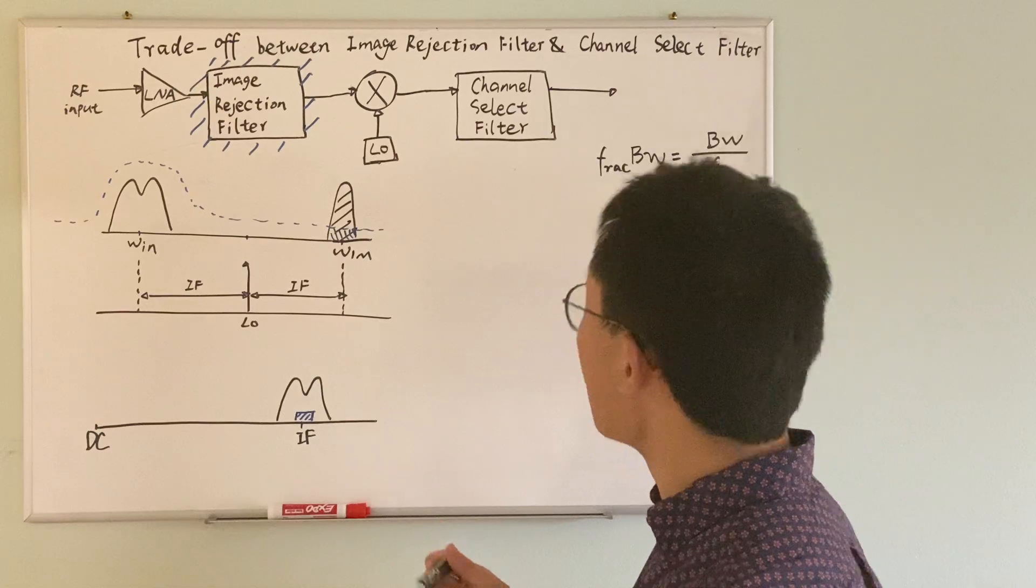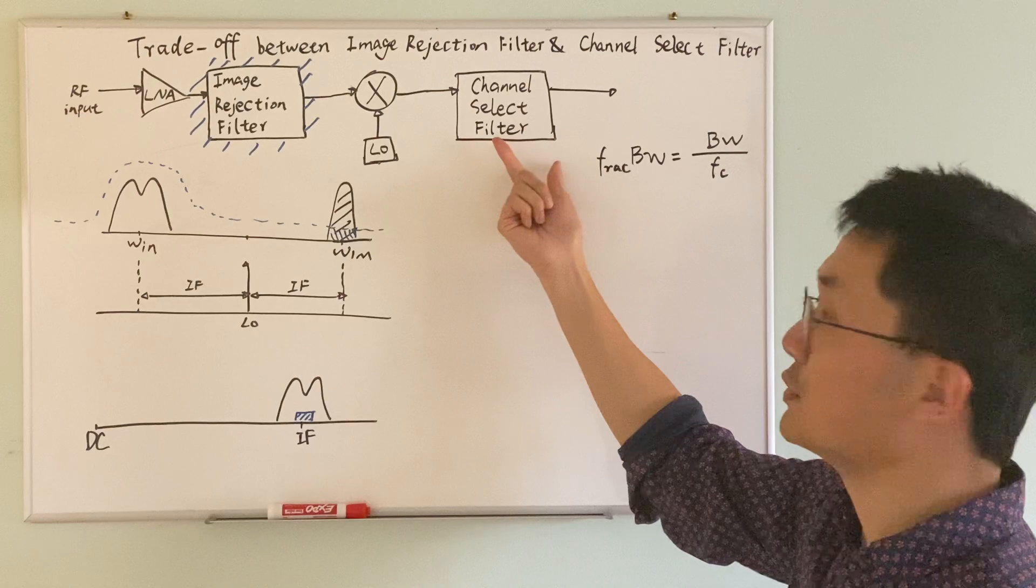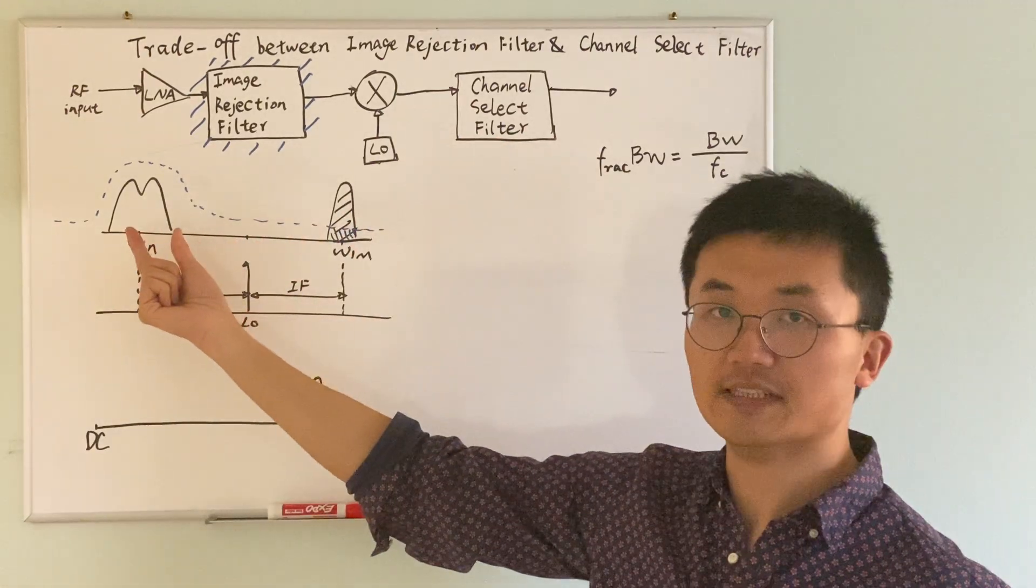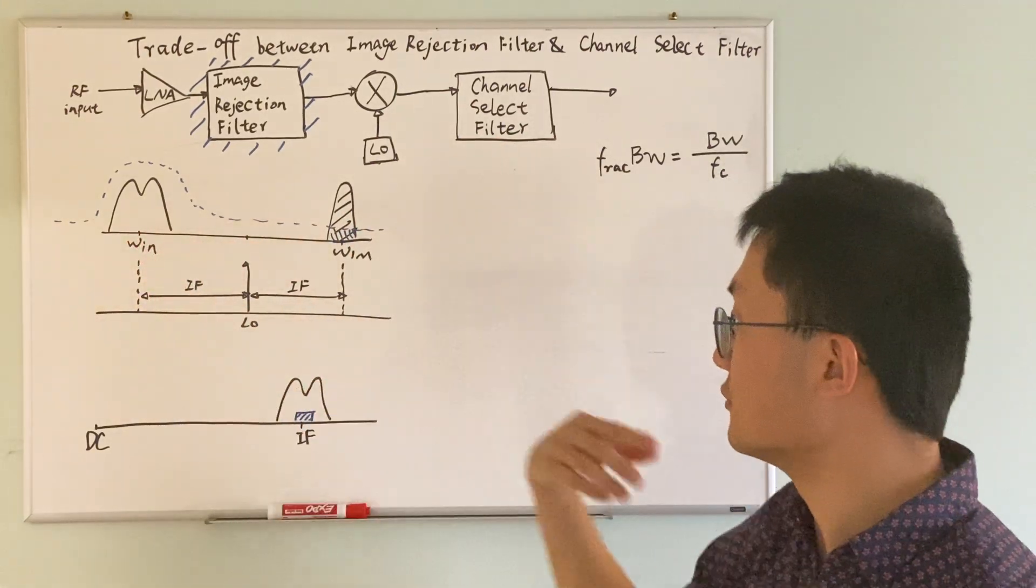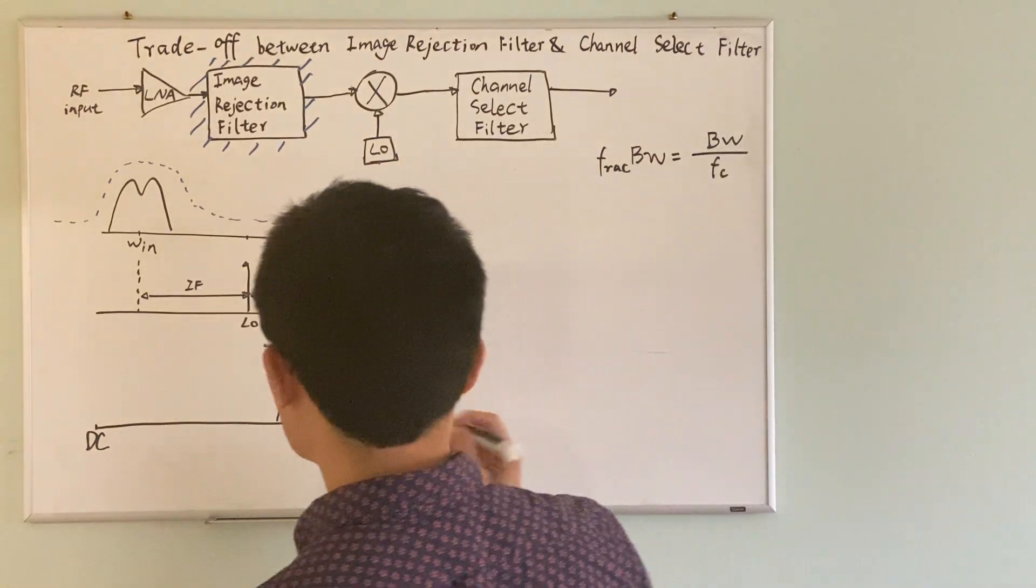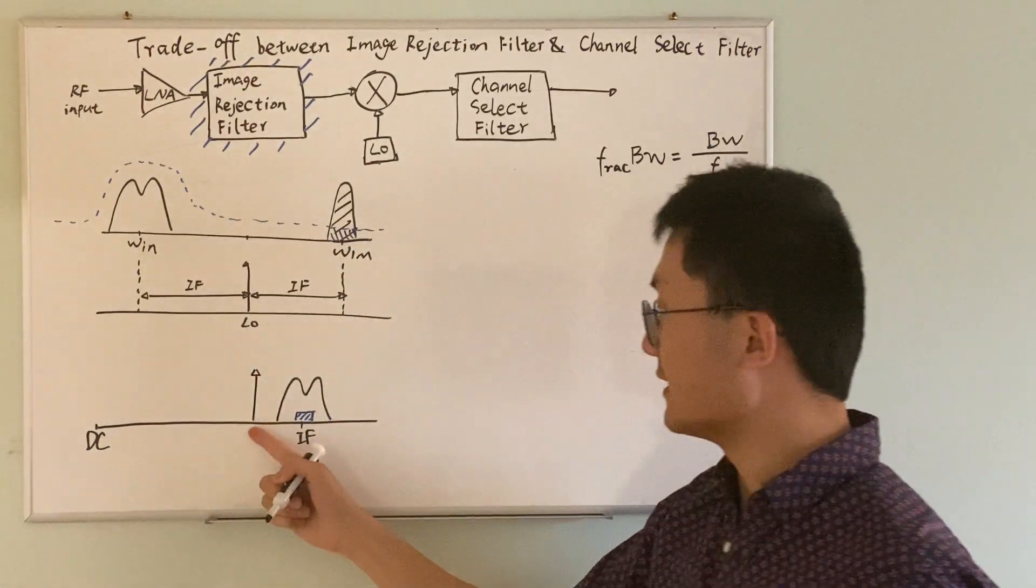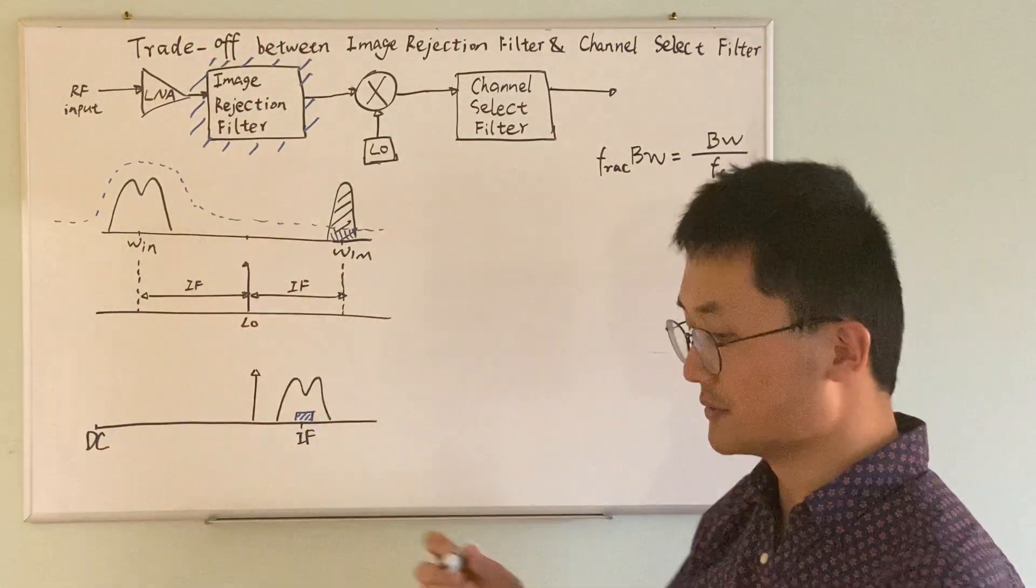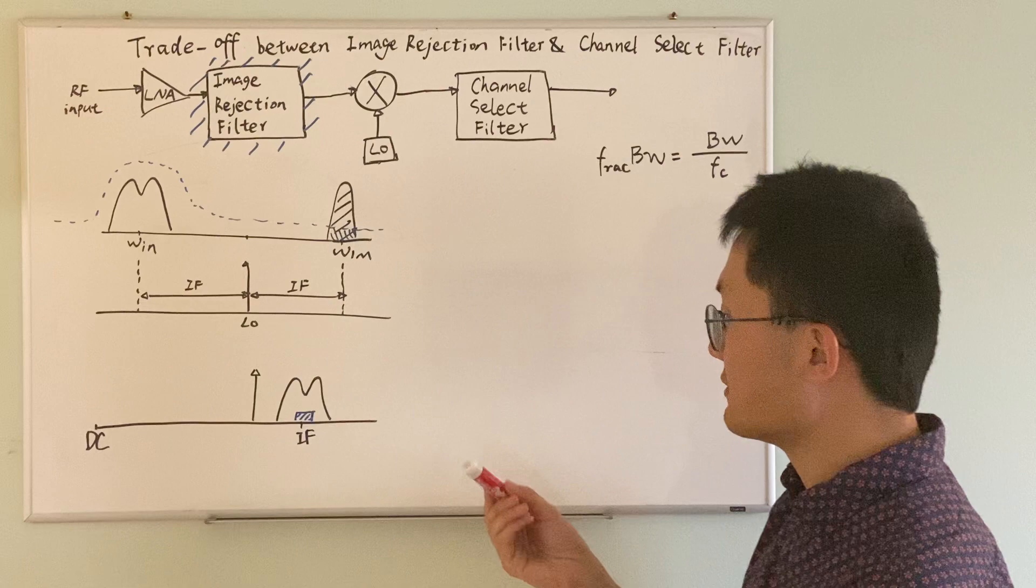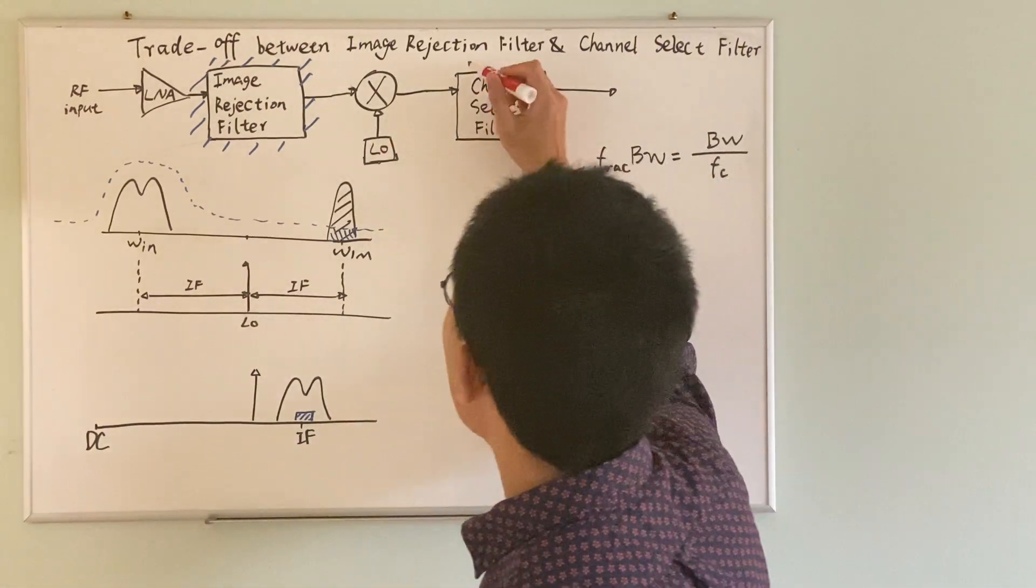So after the signal is mixed, we use a channel select filter to pick the relevant inband information out of the noise. Let's say there is a spur right here close to the useful information. And I'm going to use the red marker representing the channel select filter.